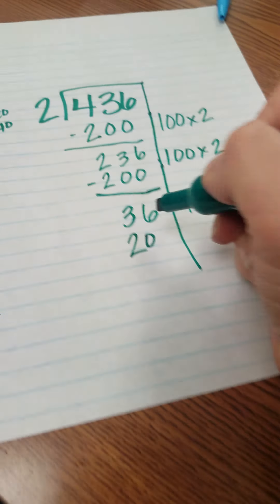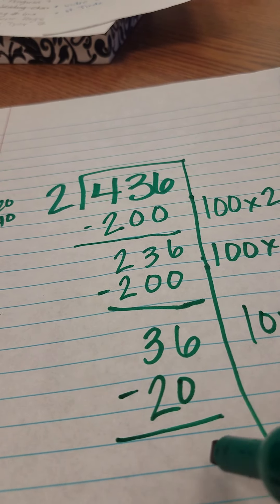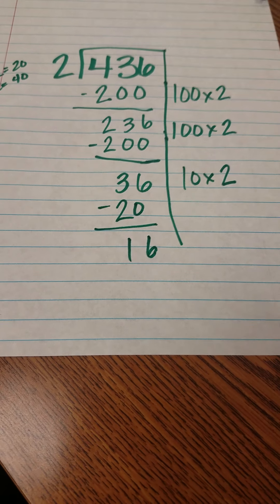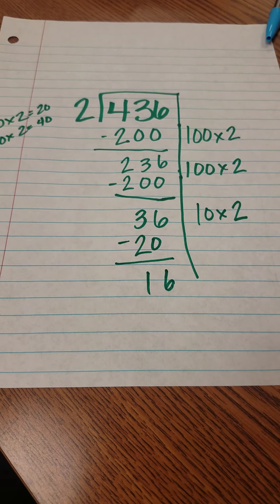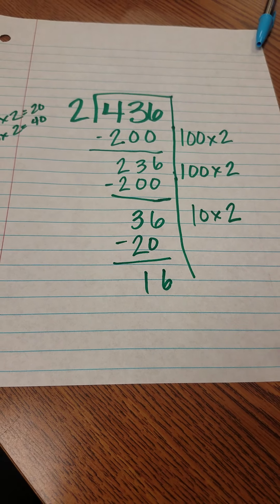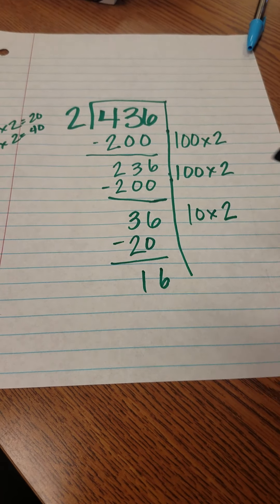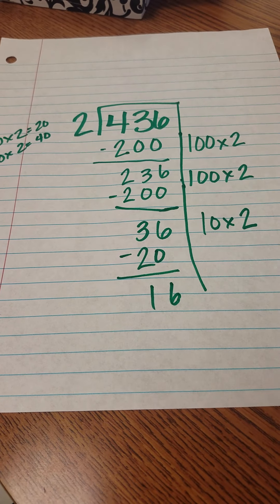So I'm going to take that out of my problem here and now I have 16 left over. When I get to less than a 10 times 2, or 10 times whatever number you're dividing by, that's when you start thinking to yourself what are my multiples of 2.